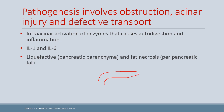Pancreatic enzymes are normally secreted in inactivated form, so they don't damage the parenchyma. But if flow through the duct is obstructed, enzymes stay and get activated, leading to pancreatic self-digestion. If enzymes can't be transported through the duct, they accumulate. Any inflammation or trauma to nearby structures can also cause premature activation of enzymes, leading to autodigestion and inflammation. IL-1 and IL-6 are particularly important in pancreatitis.